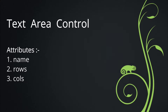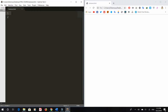The rows attribute indicates the number of rows of the textarea box. The cols attribute indicates the number of columns of the textarea box. Let's see an example.